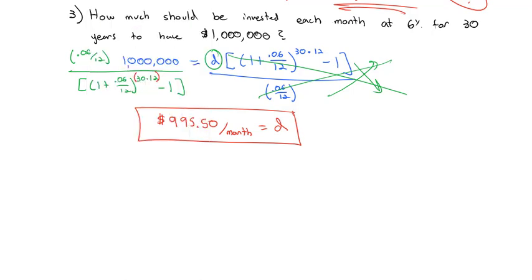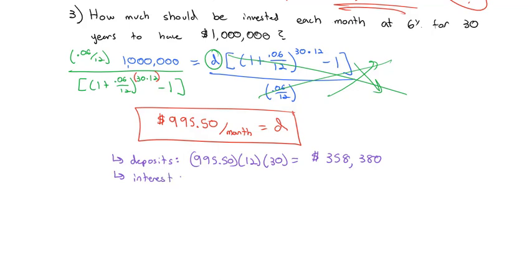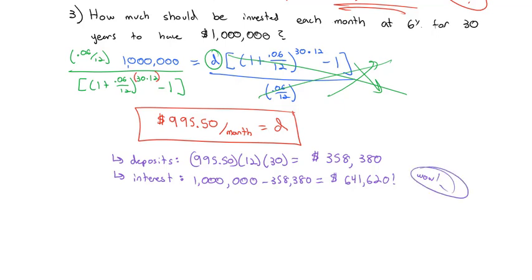Similar to before, thinking about our total deposits: we're going to deposit $995.50 per month, 12 months a year, times 30 years — you're actually only investing $358,380 to end up with $1,000,000 at the end of 30 years. That means our interest earned is $1,000,000 minus $358,380, which equals $641,620. Not only have I doubled my money — I've almost tripled my money in this case with 30 years of investments.